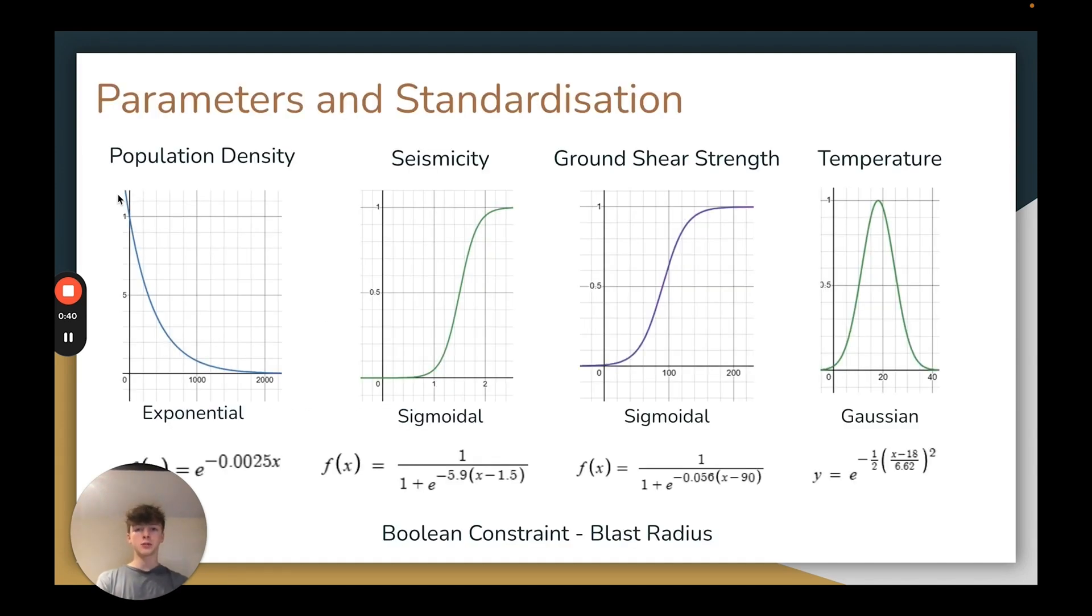First, we have to choose the key parameters for our model, with one of the four key areas of social, geological, structural and climate, in order to demonstrate how further parameters in any of these could be incorporated. Additionally, we have a boolean constraint of whether the location is in the blast radius of the top 25 potential target locations we have chosen, which will indicate whether the location is ultimately suitable or not.